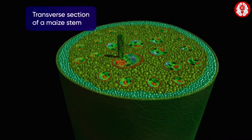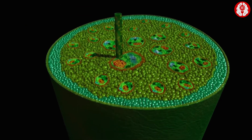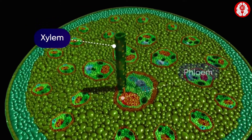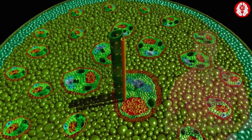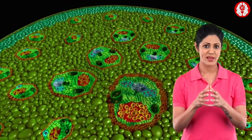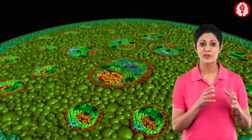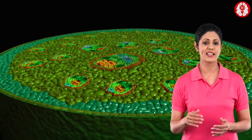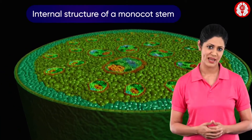In the transverse section of the stem, we observe lying parallel to the xylem is the phloem pipe. A closer gaze at the transverse section of a maize stem unfolds the sequence of specific layers of tissues, exposing the internal structure of a monocot stem.